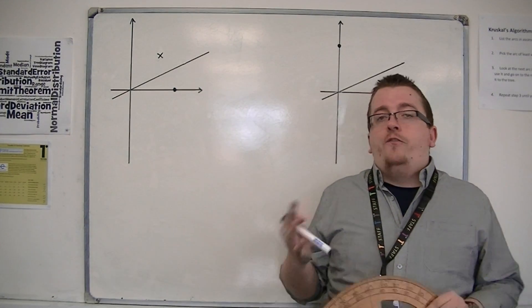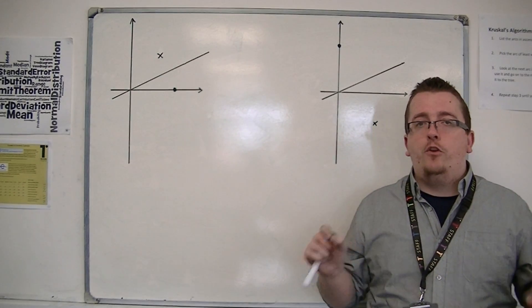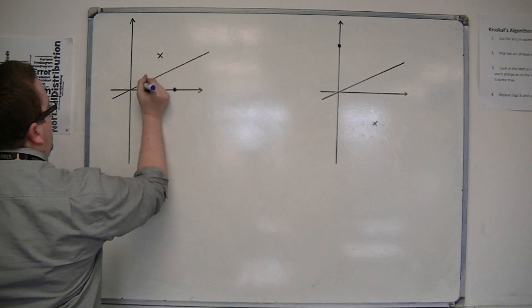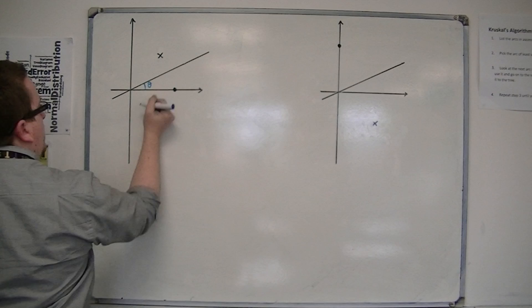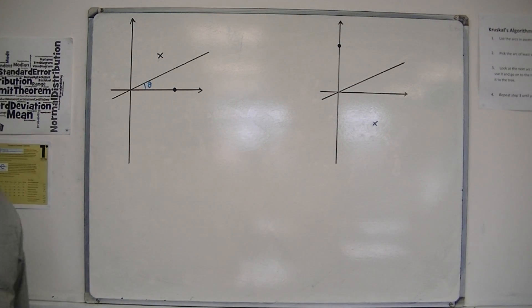But if I want to look at the reflection in a generic line that goes through the origin, let's say this line here which makes an angle of theta with the x-axis, then that's a little bit more fiddly.